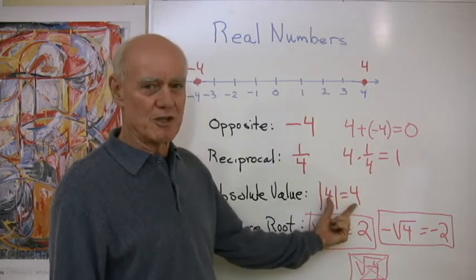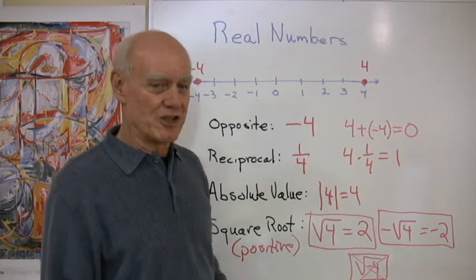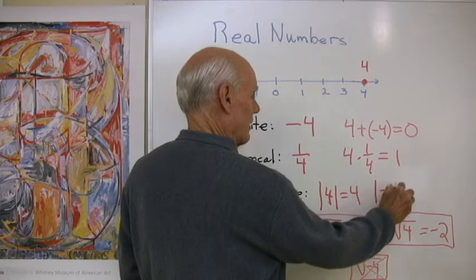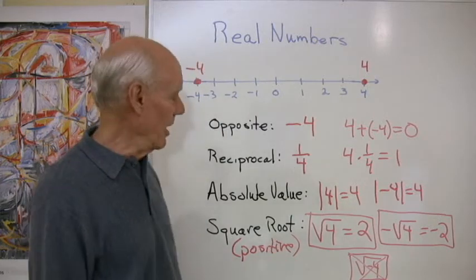The absolute value, sometimes we just want to talk about the distance a number is from zero and not its direction. So the absolute value of four is four, and the absolute value of negative four is also four, just the distance from zero on the number line.